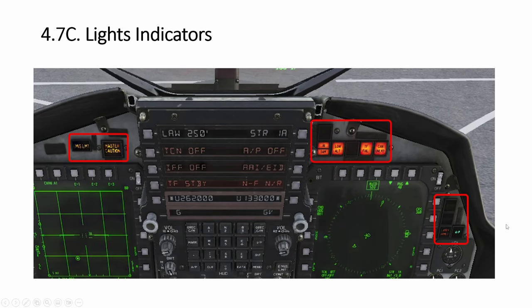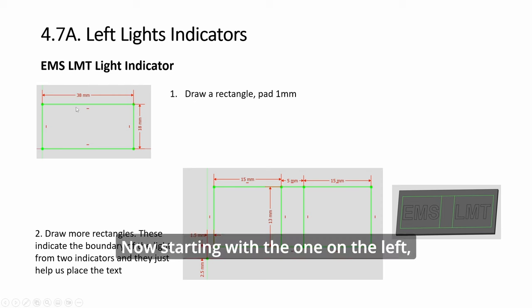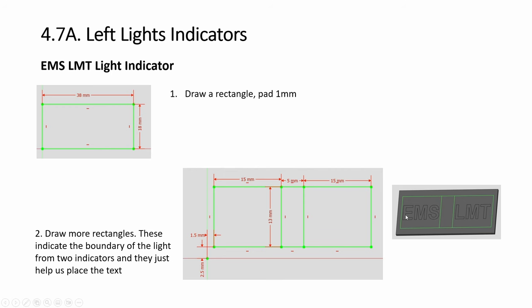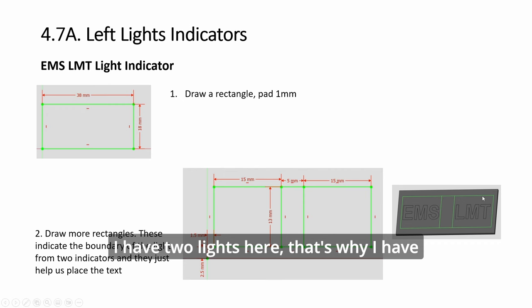Starting with the one on the left, this EMS LMT - you have the base and then you draw these lines. This is not to pad or whatever, this is to basically mark where the text will fit into. You don't want to be too close to the edge. I have two lights here, that's why I have these two rectangles.